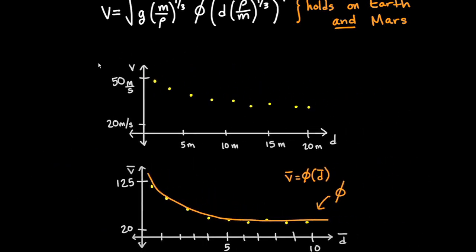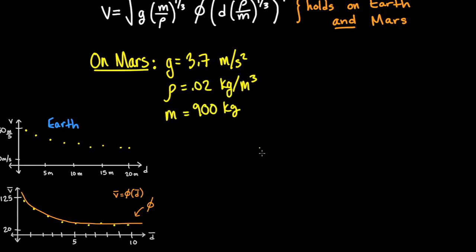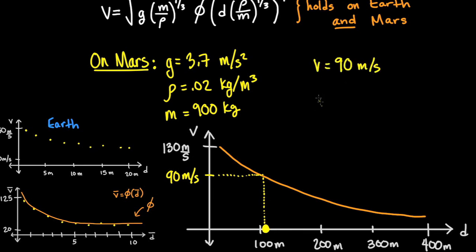Now that we have phi, we can transform the axes again to represent the canopy diameter and terminal velocity on Mars. This is done by converting v-bar and d-bar to v and d by scaling according to known values of the gravity, atmospheric density, and mass of the rover on Mars. To find the diameter, we find the point on the v-axis that corresponds to a terminal velocity of 90 meters per second, and use our curve to determine the diameter that corresponds to this terminal velocity. Now we have the specification we need to design the size of our parachute to be used on the descent to Mars.